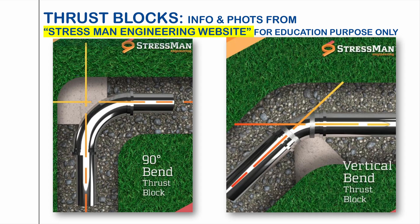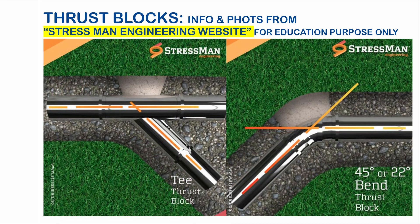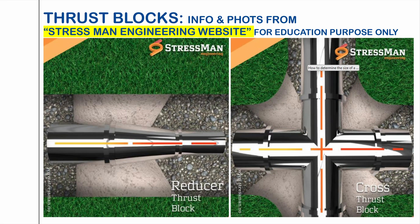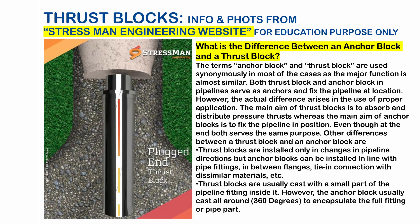Here are some thrust block information and photos collected from the Stressman Engineering website, for education purposes only. Here is an example of a 90-degree bend thrust block on the left and right side, a vertical bend thrust block, a thrust block prepared for a tee, and on the right side a 45-degree or 22-degree bend thrust block. Also shown are a reducer thrust block, a cross thrust block, and a specific thrust block for the plugged end.